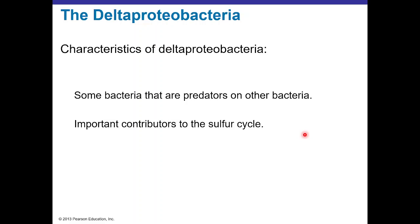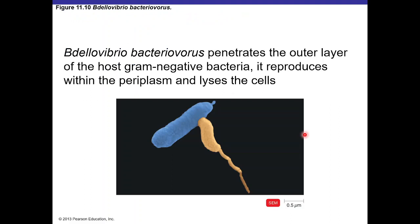Delta Proteobacteria has very few members. Some are predators of other bacteria, and some are important contributors to the sulfur cycle. Bdellovibrio bacteriovorus is a predator bacteria that attacks other bacteria — it penetrates the outer layer of gram-negative host bacteria, reproduces within the cytoplasm, and then lyses the host cell. A scanning electron micrograph shows it in orange attacking another bacterium.